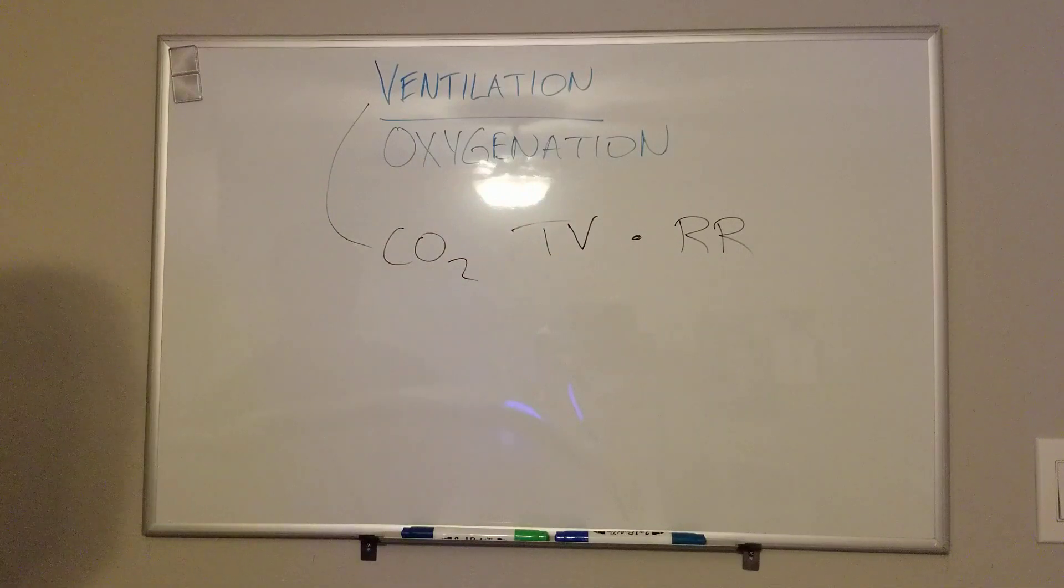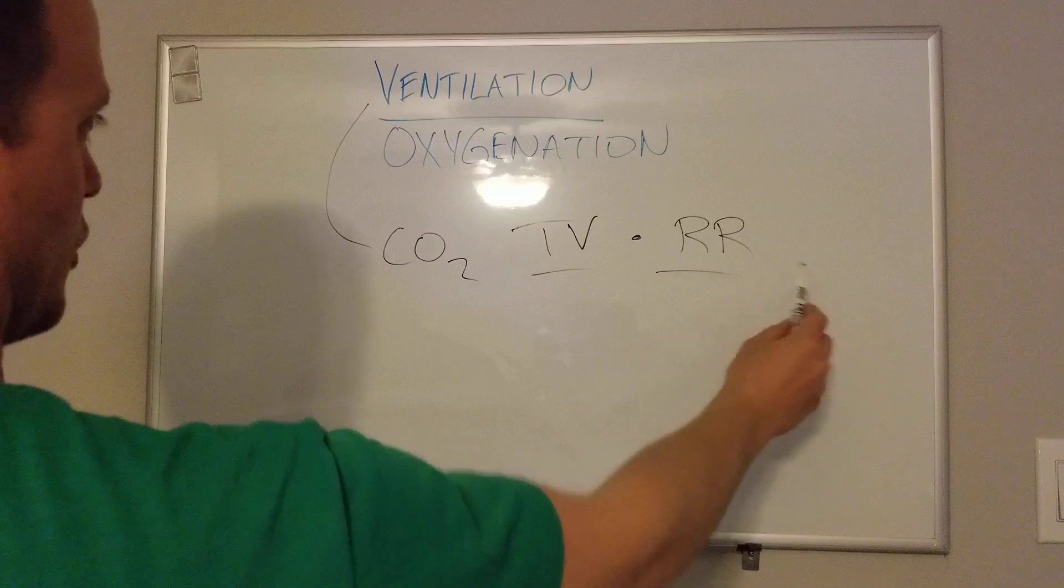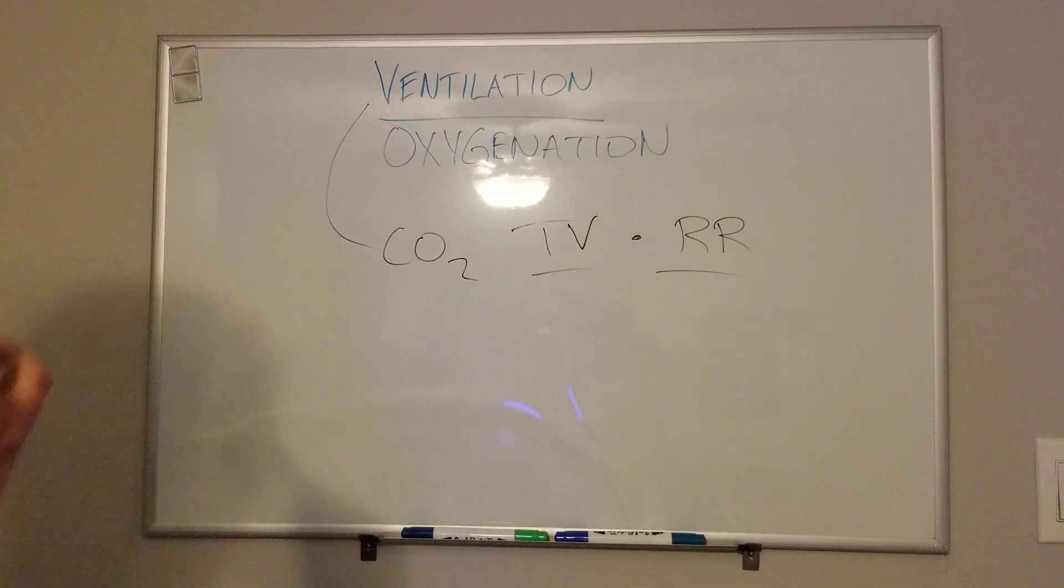So if someone's CO2, normal values are like 35 to 45. If someone's CO2 was 50 or 60, we'd want to increase their minute ventilation. The two components there in volume control ventilation that you can change are tidal volume and respiratory rate. You would change those, and you'd recheck an arterial blood gas or ABG in a bit and see how their CO2 has adjusted or look for other factors.